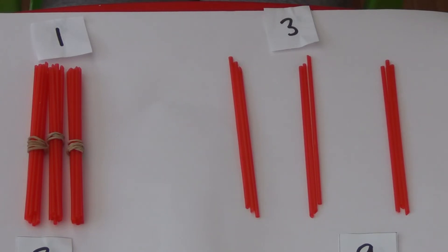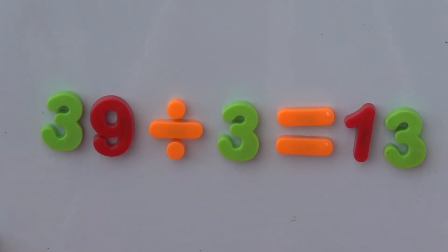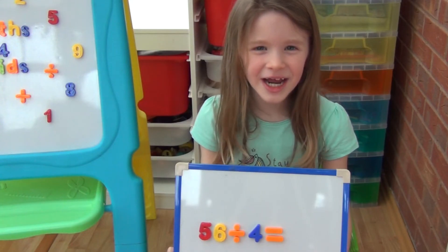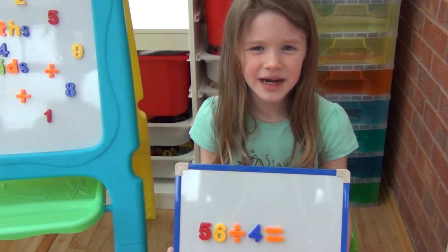1 ten and 3 1s is 13. So 39 divided into groups of 3 equals 13. So 39 divided by 3 equals 13. Now I'm going to try a trickier one.